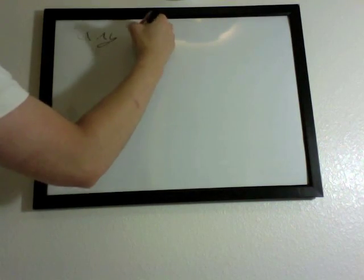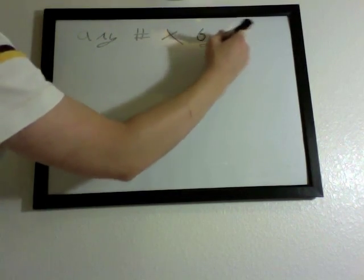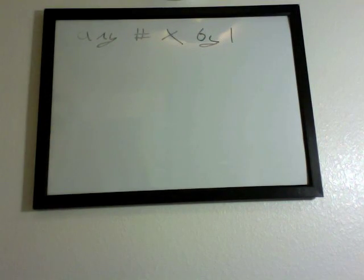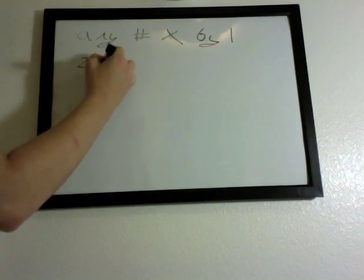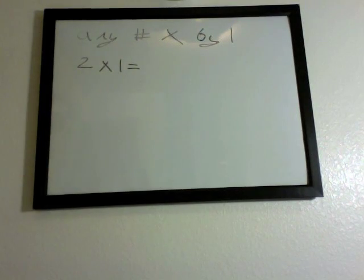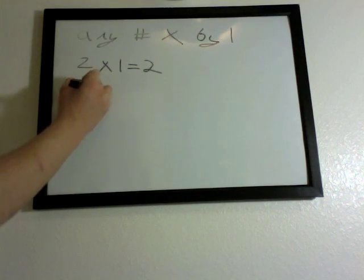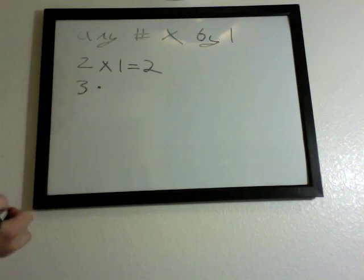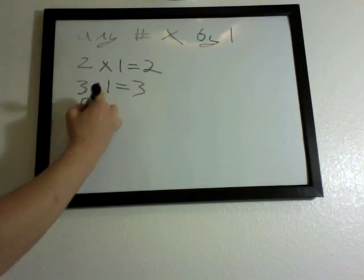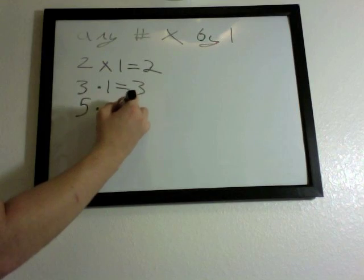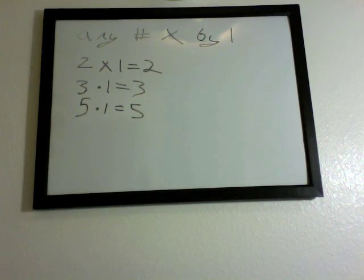Now let's talk about another rule: any number multiplied by one will equal the original number. So two times one is two, three times one is three, five times one is five. Just remember these rules.